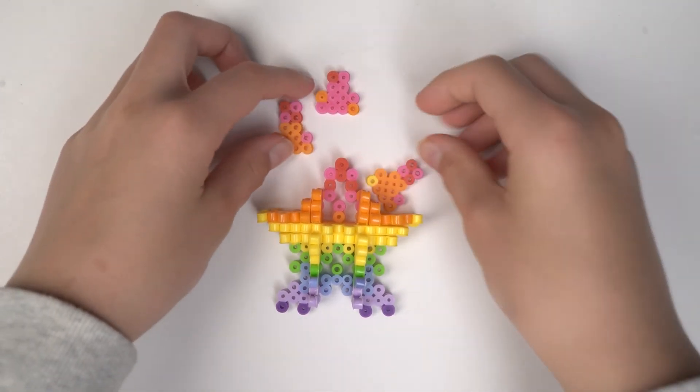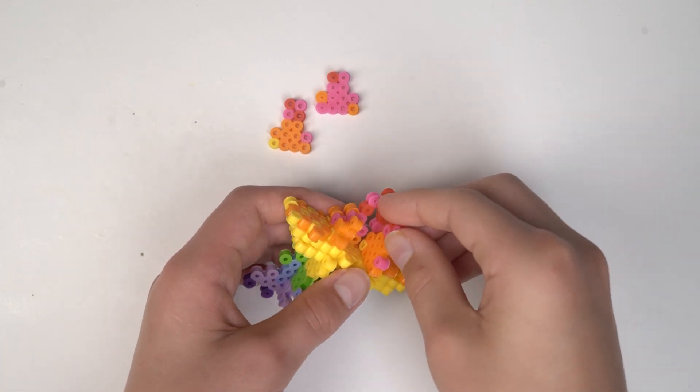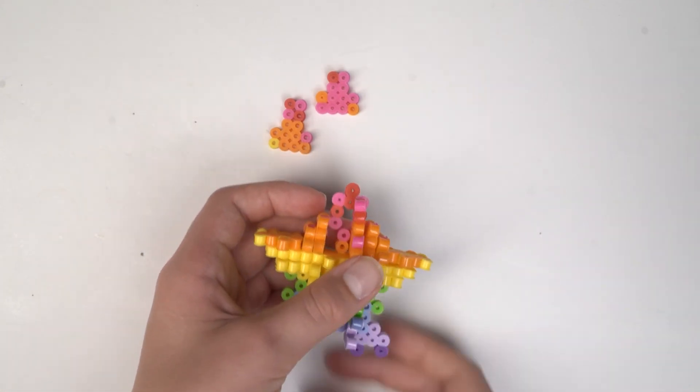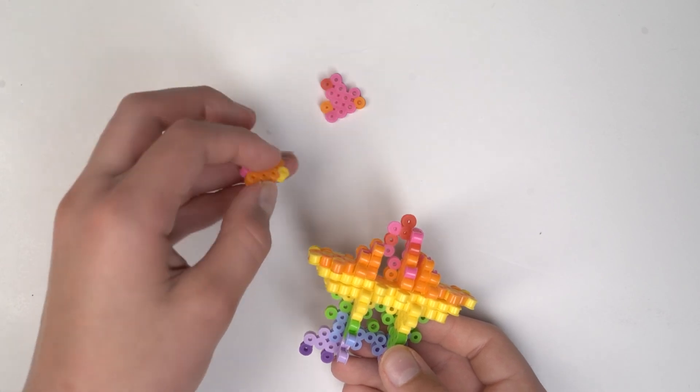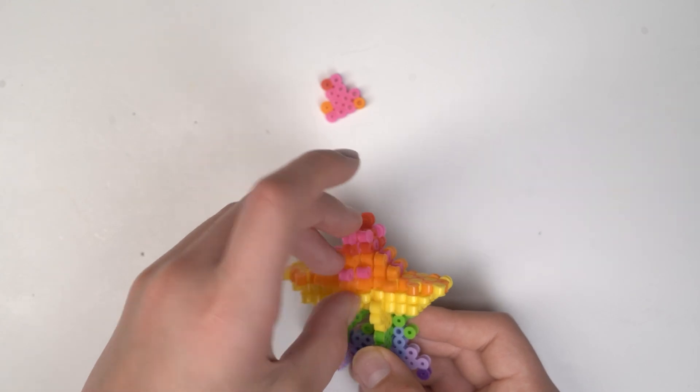Now we're going to be taking these T shapes and we're going to be putting them into the bottom most holes. There are two of them, so if we put them in, there's going to be one bead gap perfect for putting in our next piece.